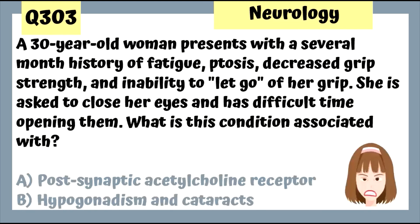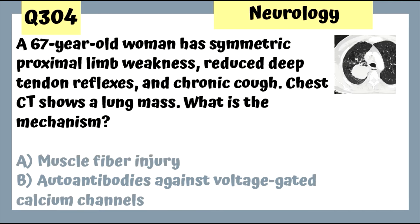Question 303: A 30-year-old woman has several months of fatigue, ptosis, decreased grip strength, and inability to let go of her grip; she has difficulty opening her eyes. This is myotonic dystrophy, associated with hypogonadism and cataracts.